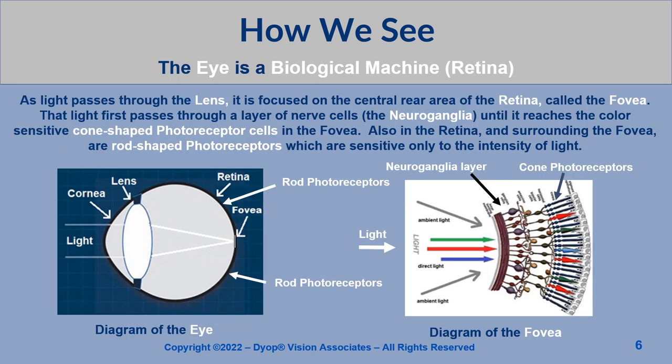As light passes through the lens, it is focused on the central rear area of the retina called the fovea. That light first passes through a layer of nerve cells until it reaches the color-sensitive cone-shaped photoreceptor cells in the fovea. Also in the retina and surrounding the fovea are rod-shaped photoreceptors, which are sensitive only to the intensity of light.